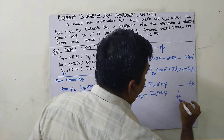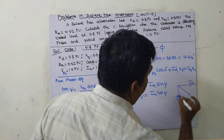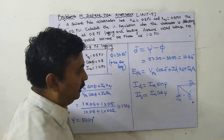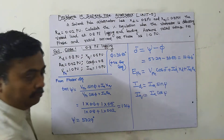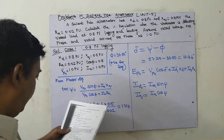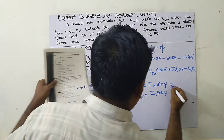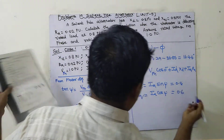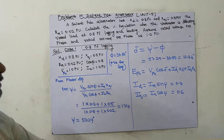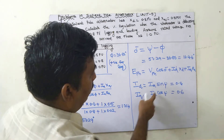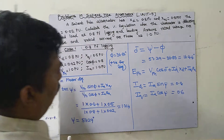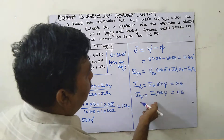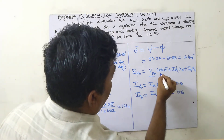Id = Ia·sin ψ and Iq = Ia·cos ψ. These are derived from the phasor diagram where Id and Iq are components of Ia. Substituting: Id = 1 × sin(53.29°) ≈ 0.8 per unit and Iq = 1 × cos(53.29°) ≈ 0.6 per unit.